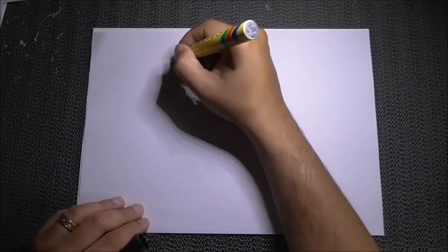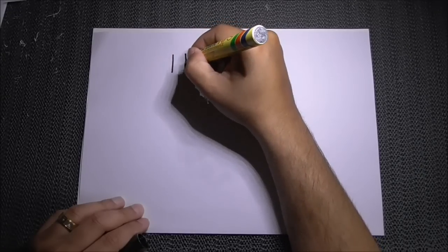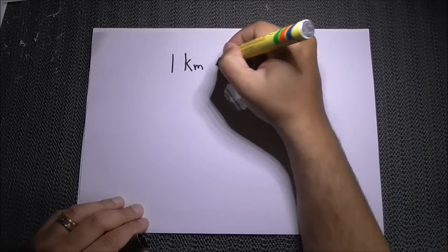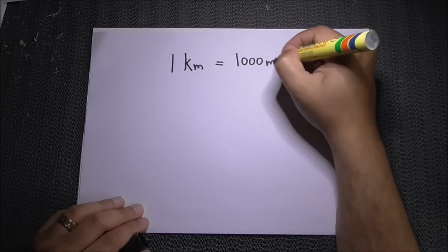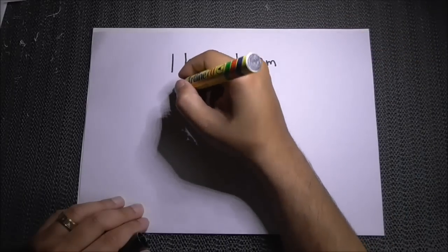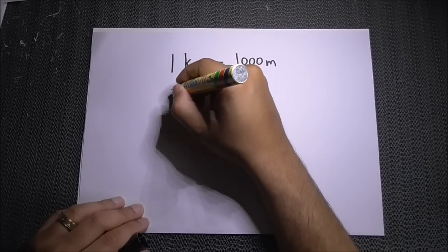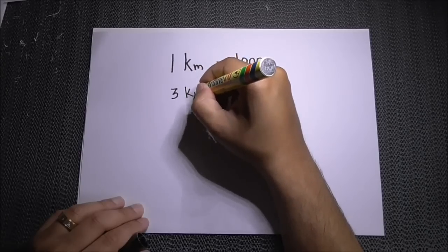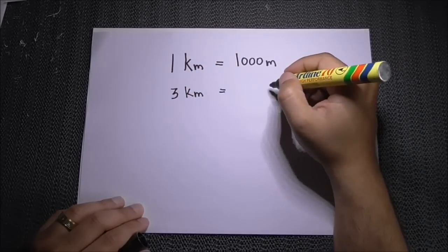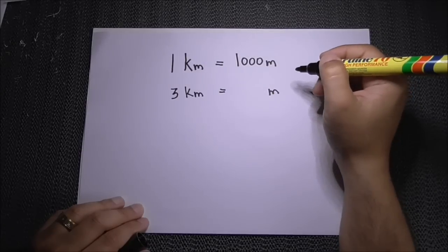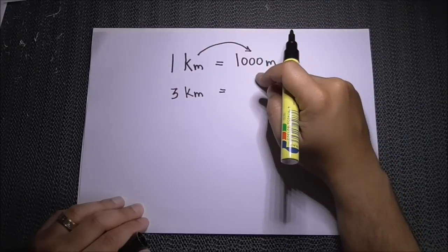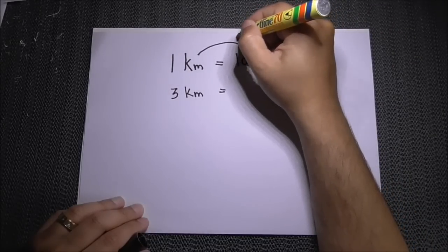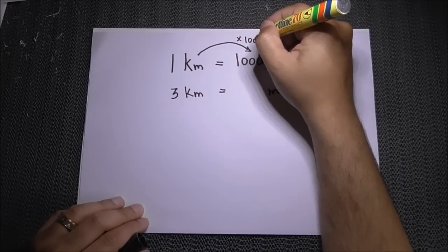Now if you wanted to convert kilometers back to meters, you do the opposite. One kilometer equals one thousand meters. Say for example you had three kilometers and you were asked to convert to meters — the number one is being multiplied by one thousand, that's why it becomes one thousand meters.